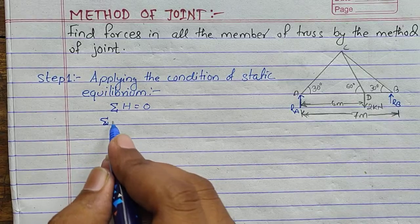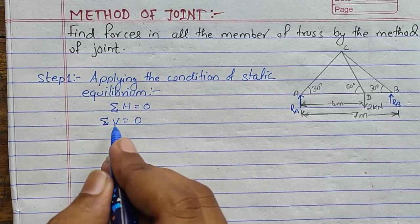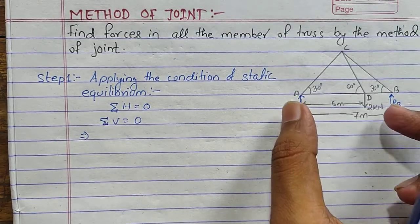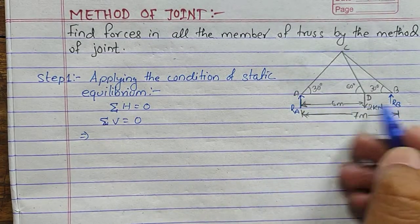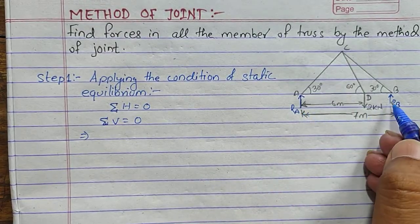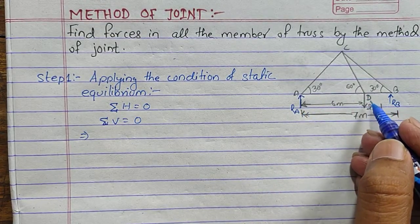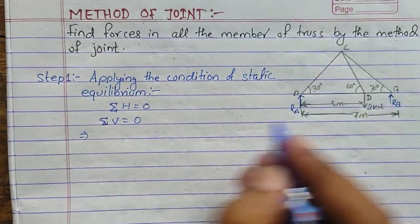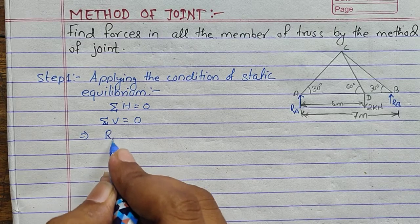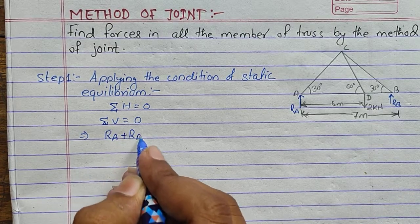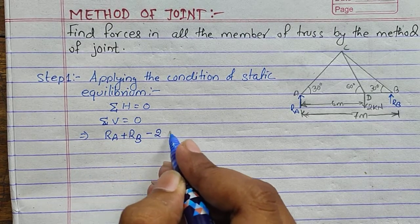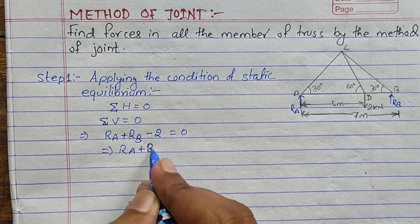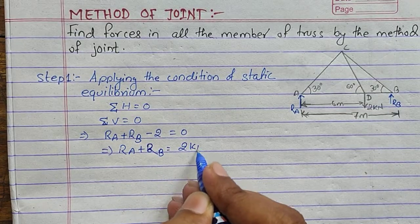We now use ΣV=0, the second equilibrium condition. There are only three forces acting in the vertical direction: reaction at A, reaction at B, and the force at D. Taking upward forces as positive and downward forces as negative, this gives RA + RB − 2 = 0, which implies RA + RB = 2 kN.